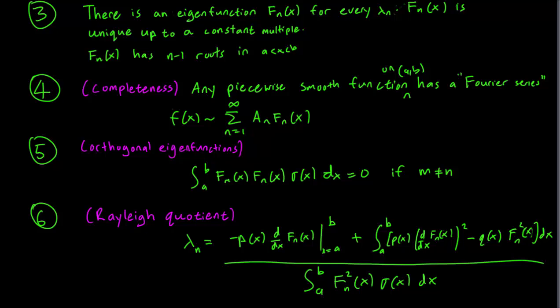It's called the Rayleigh quotient and it's a way to calculate the eigenvalue if you know what the eigenfunction is. This formula looks pretty terrible but in practice the calculation gets a lot easier once we include the information from the boundary values. We will discuss all of these theorems in a later part of the course.